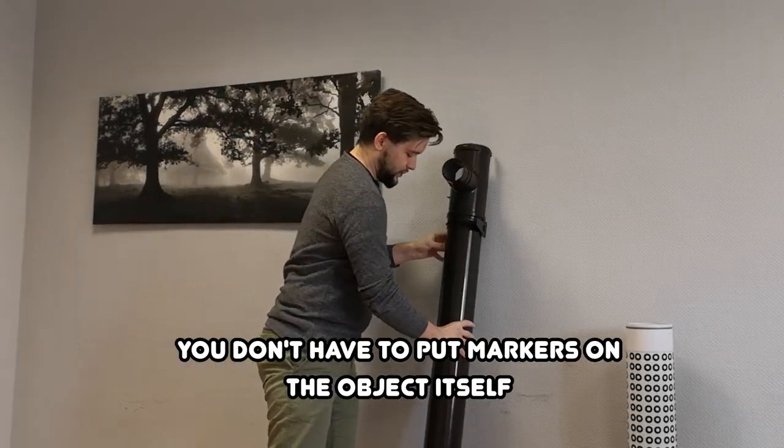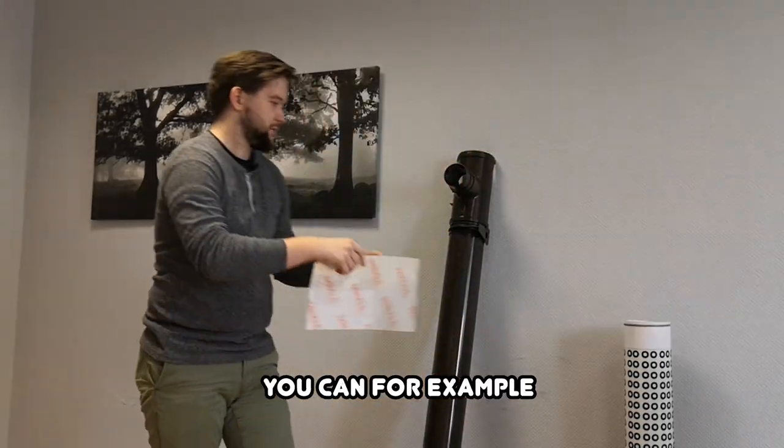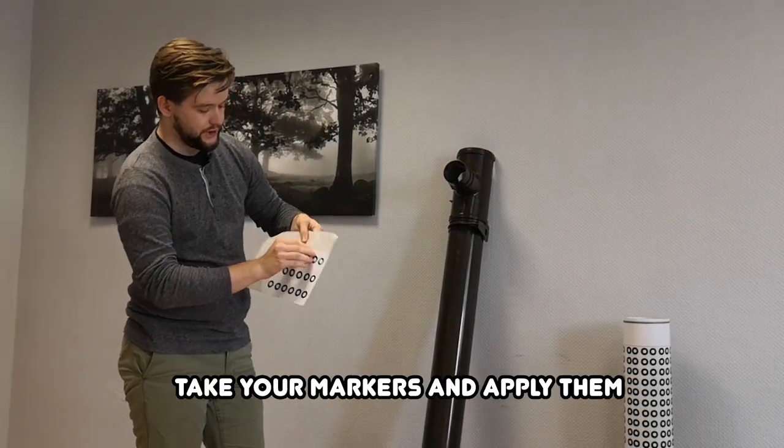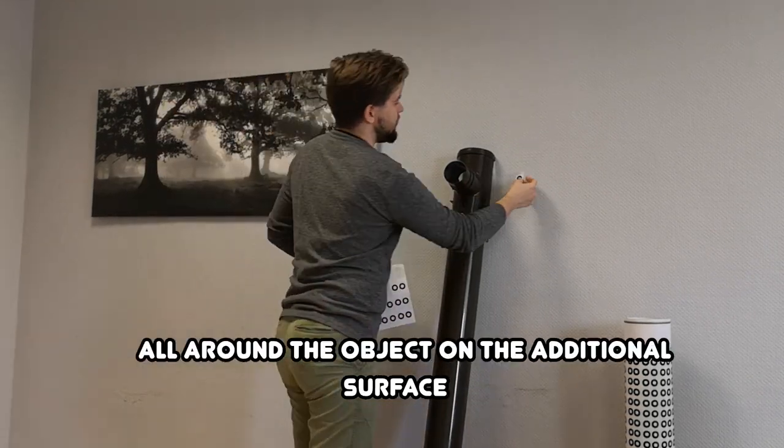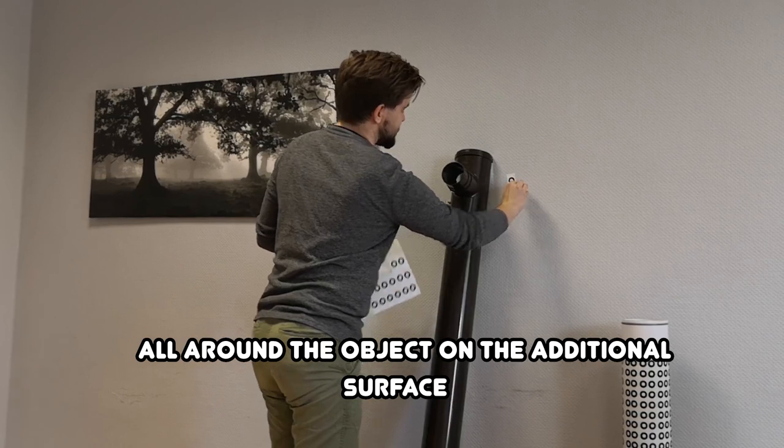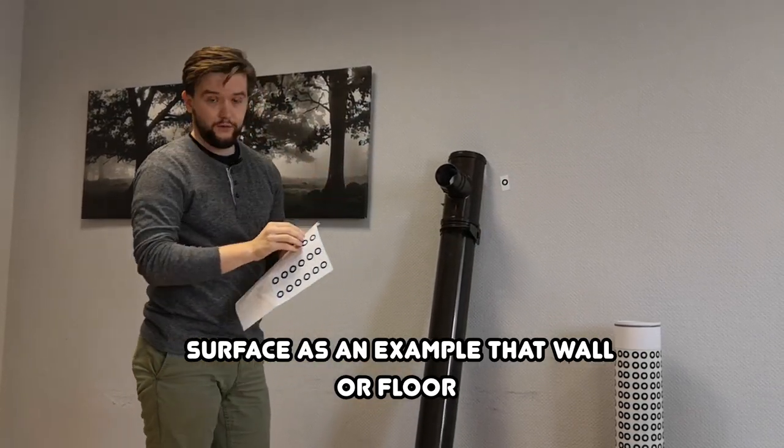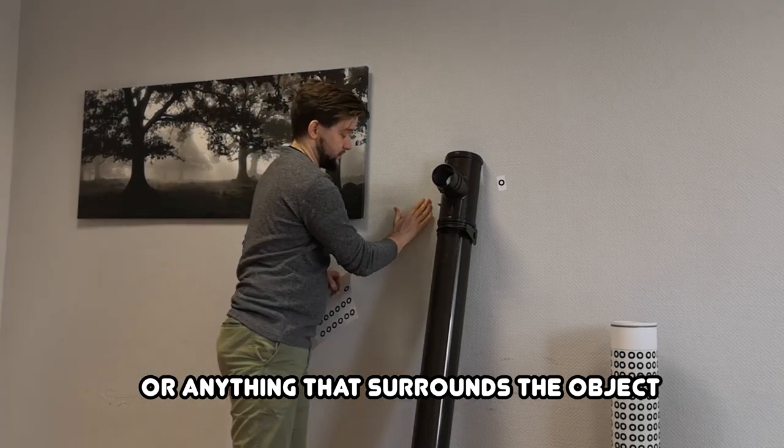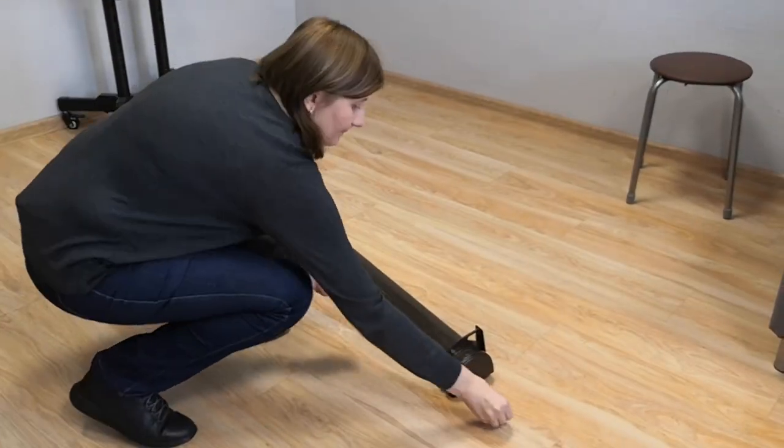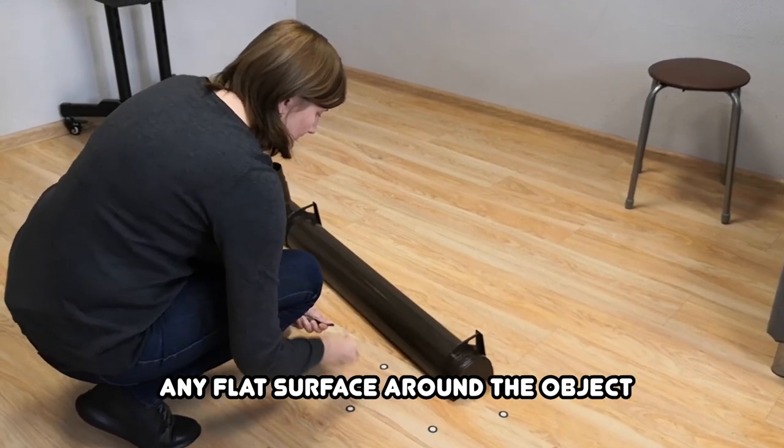You don't have to put markers on the object per se. You just can, for example, take your markers and apply them all around the object on an additional surface, as an example, that wall or floor or anything that surrounds the object.